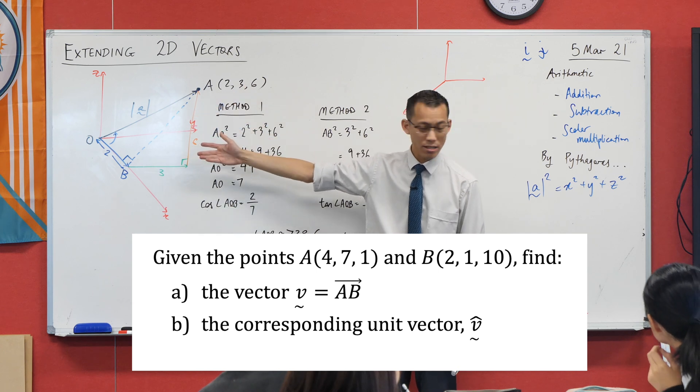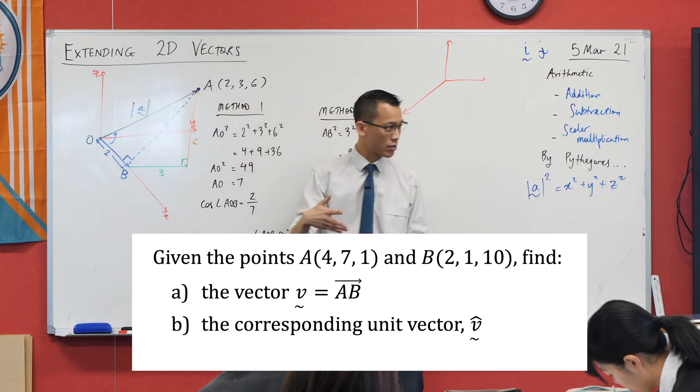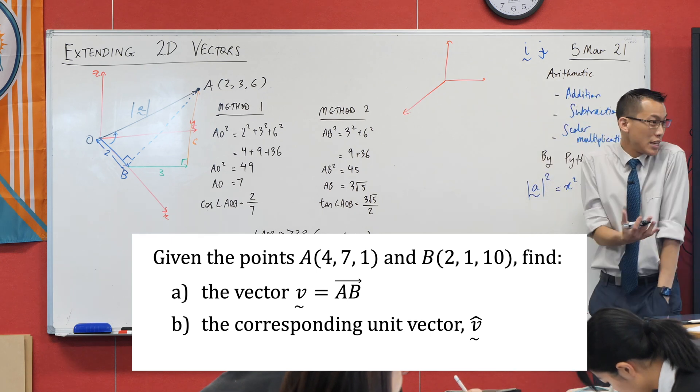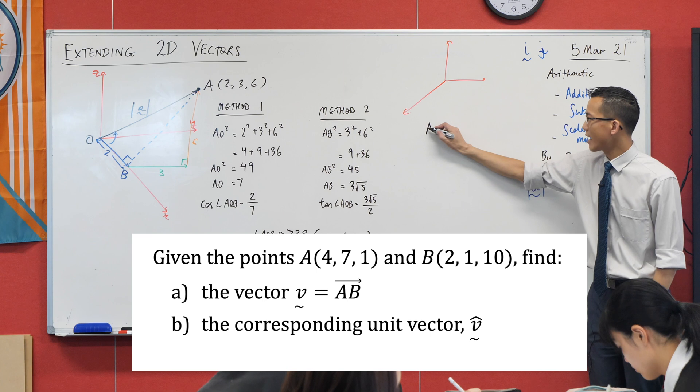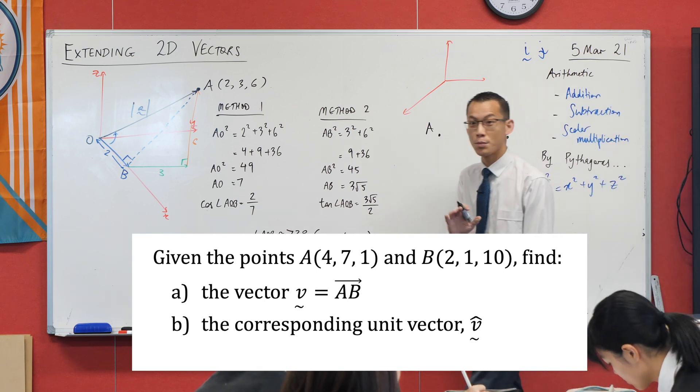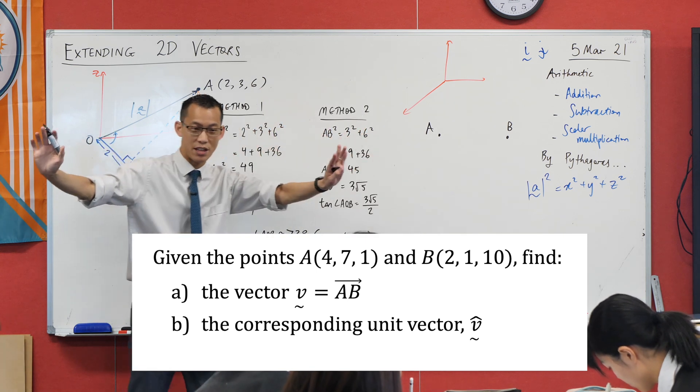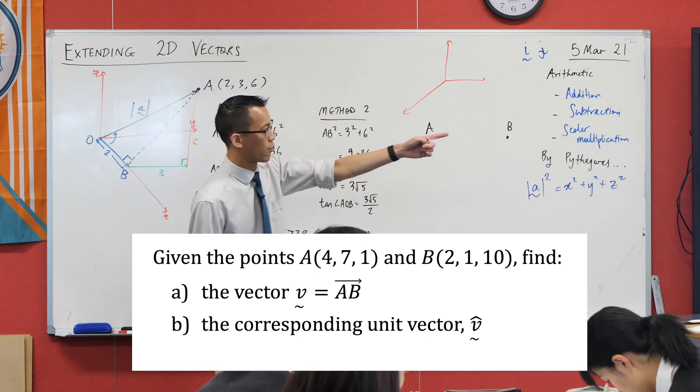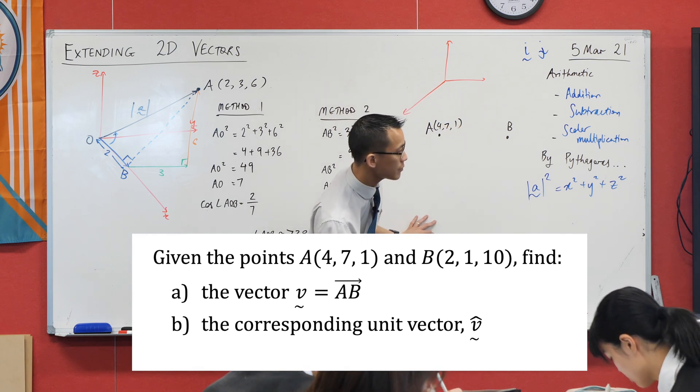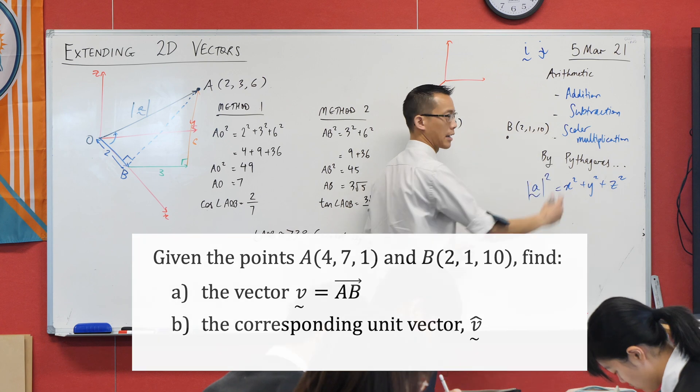But here I'm going to suggest to you a slightly different simpler way of putting this. Let's just take point A and point B and literally just put them anywhere we'd like, just nice and separated out. I have their coordinates 4, 7, 1 and 2, 1, 10.